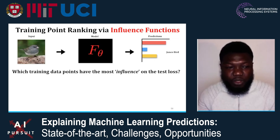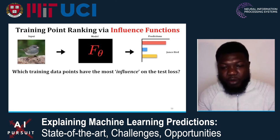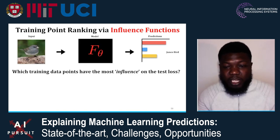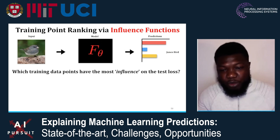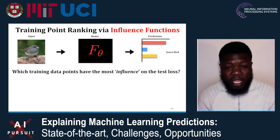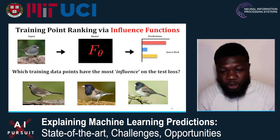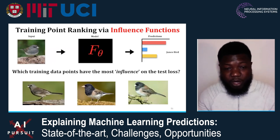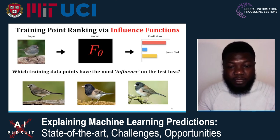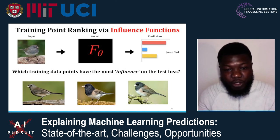Influence functions can answer the question: which training data points have the most influence on the test loss for this Junko Bird example? If you compute this, you get a ranking of all training points by their influence on the test loss of that example. If those top-ranked points are all Junko Bird examples, you as a model developer can look at them and have more confidence that your model is relying on the right semantic features to identify the input as a Junko Bird.